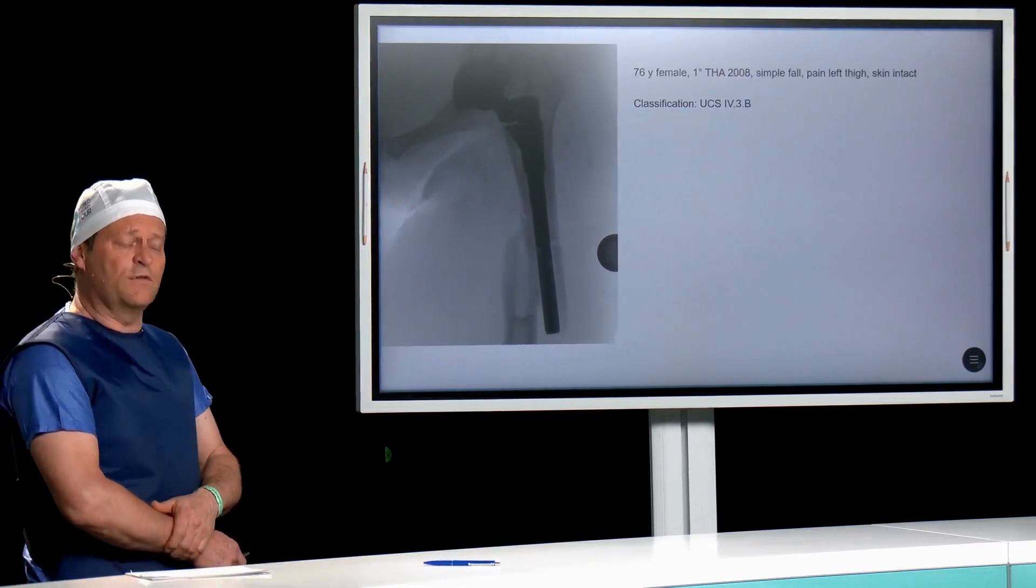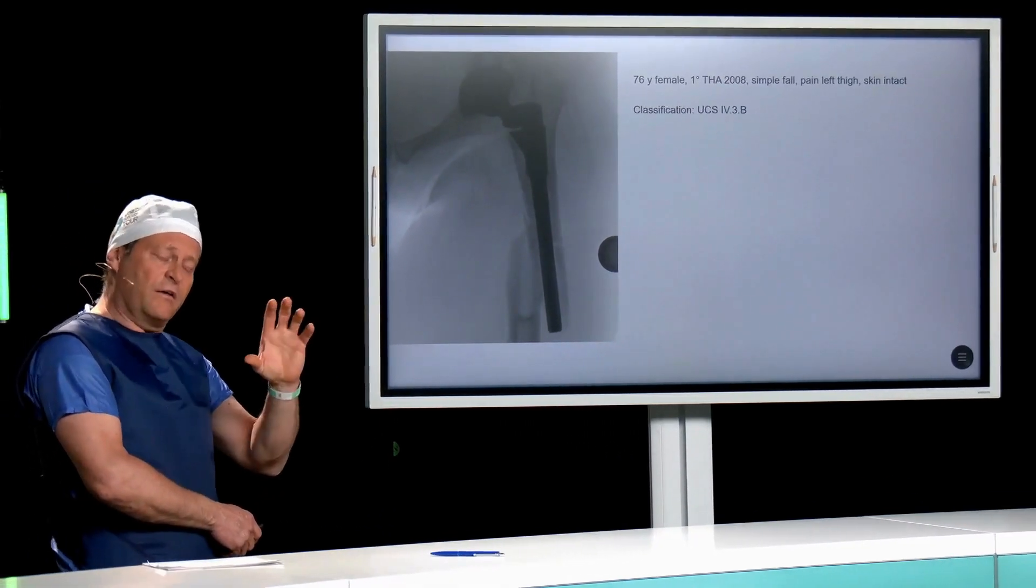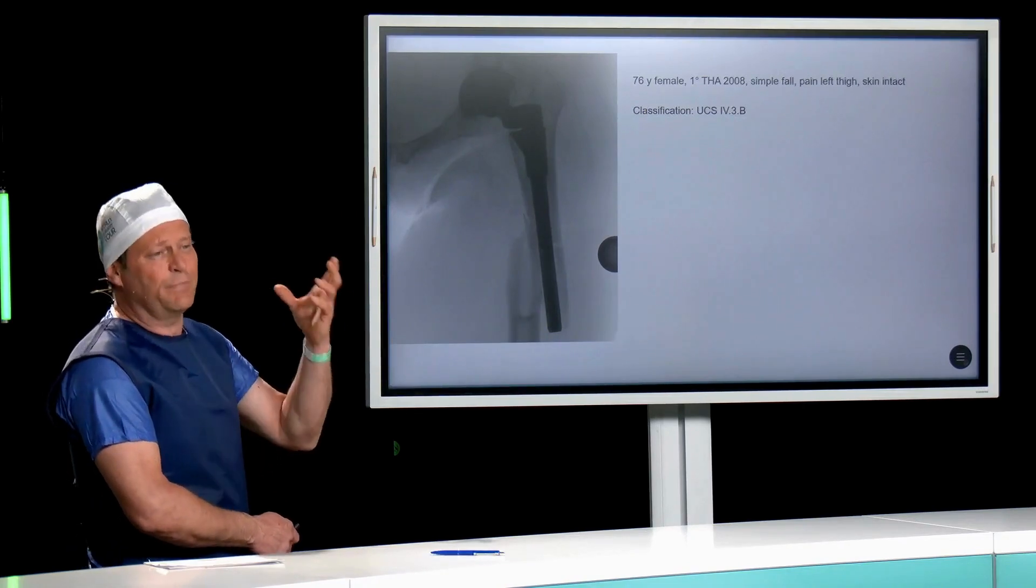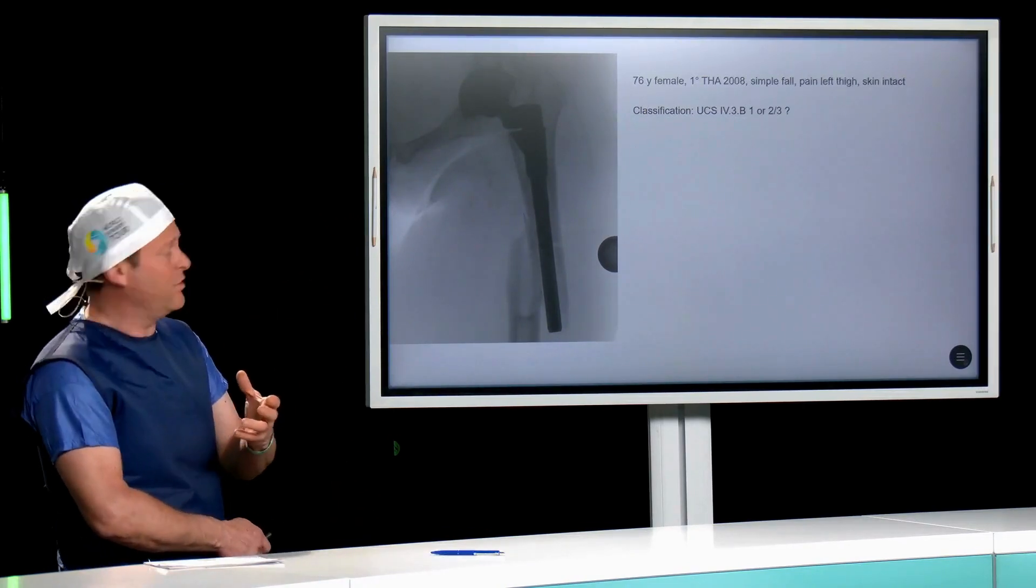The question is always if you deal with proximal femur fractures around the prosthesis, is it a B1 or maybe B2 or maybe B3?